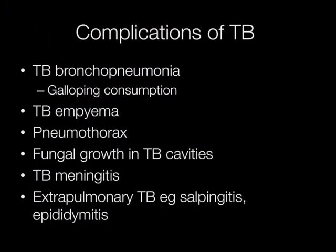Complications of TB include TB bronchopneumonia, otherwise known as galloping consumption; TB empyema, where there is a purulent exudate in the pleural cavities; pneumothorax; fungal growth into the TB cavities; TB meningitis. TB can also involve extra-pulmonary sites such as the fallopian tubes causing TB salpingitis, and it may also involve the epididymis causing TB epididymitis.